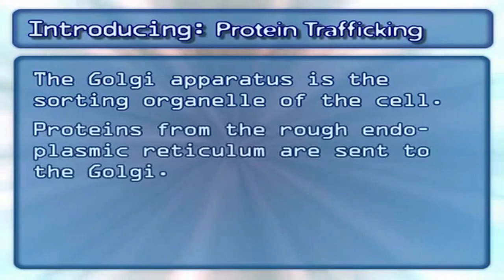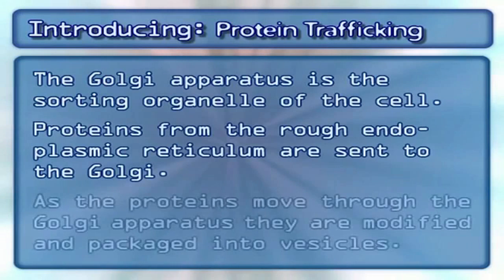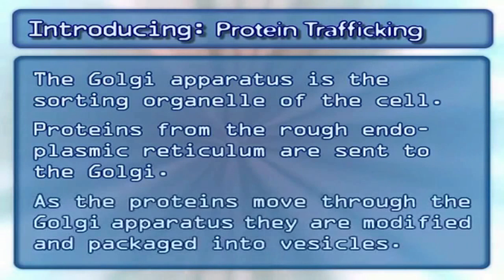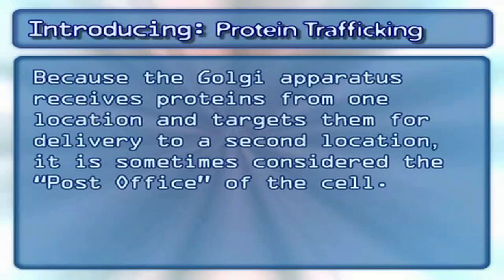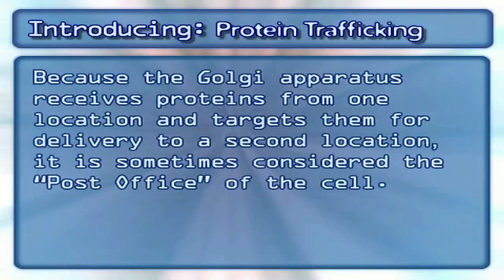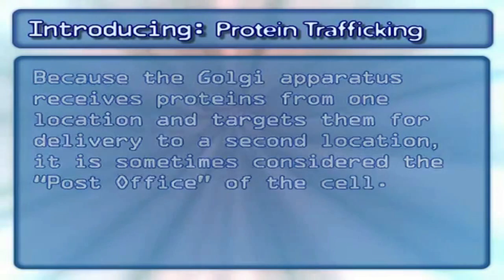Proteins from the rough endoplasmic reticulum are sent to the Golgi. As the proteins move through the Golgi apparatus, they are modified and packaged into vesicles. Because the Golgi apparatus receives proteins from one location and targets them for delivery to a second location, it is sometimes considered the post office of the cell.